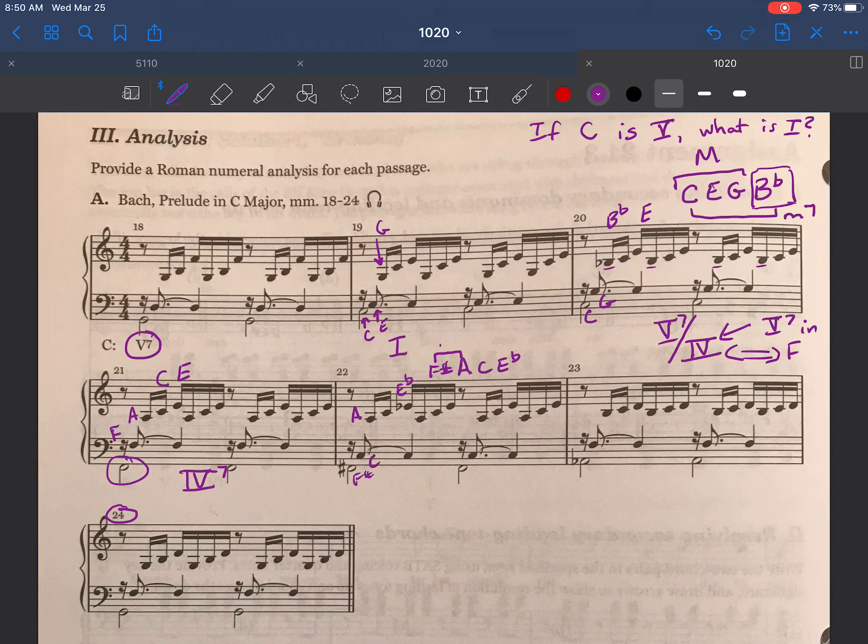We look at how the thirds are built. F sharp to A is a minor third. A to C is a minor third. C to E flat is a minor third. So I have all minor thirds. The only chord that has all minor thirds is a fully diminished seventh chord. And where do fully diminished seventh chords occur? They only occur on leading tones. So fully diminished seventh chords only happen on leading tones. Same as the major minor seventh only occurs on V7.